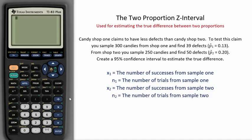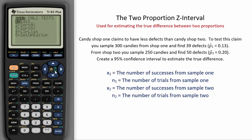The two-proportion Z-interval is used for estimating the true difference between two proportions. To find it on the TI calculator, go to STAT, then over to TESTS, and down to 2-PropZInt.